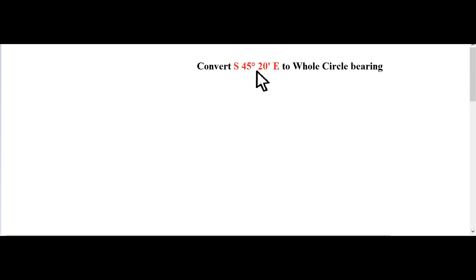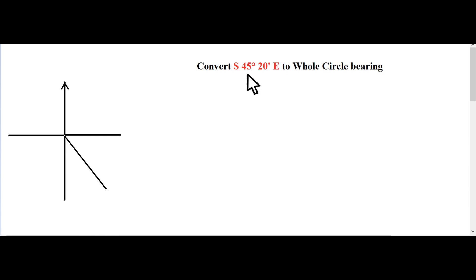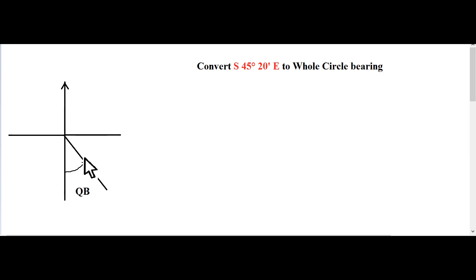Now let us see how we can convert a quadrantal bearing into whole circle bearing. Here is an example: the quadrantal bearing is South 45 degrees 20 minutes East. First of all, let's draw a figure. The given quadrantal bearing is South 45 degrees 20 minutes East, hence it is in the Southeast quadrant — that is the 2nd quadrant. We draw a line in the 2nd quadrant and the angle is given as 45 degrees 20 minutes, measured from the south. Now we need to convert this quadrantal bearing into whole circle bearing, which is measured from the magnetic north in clockwise direction towards the line.